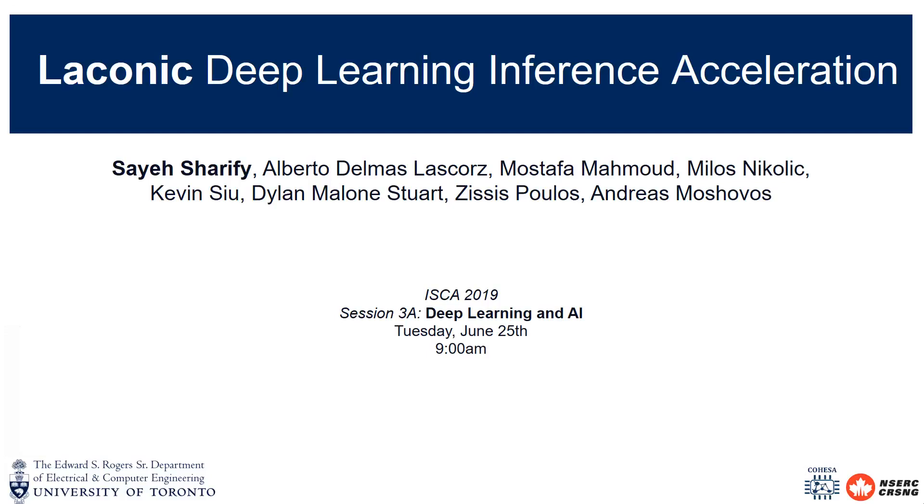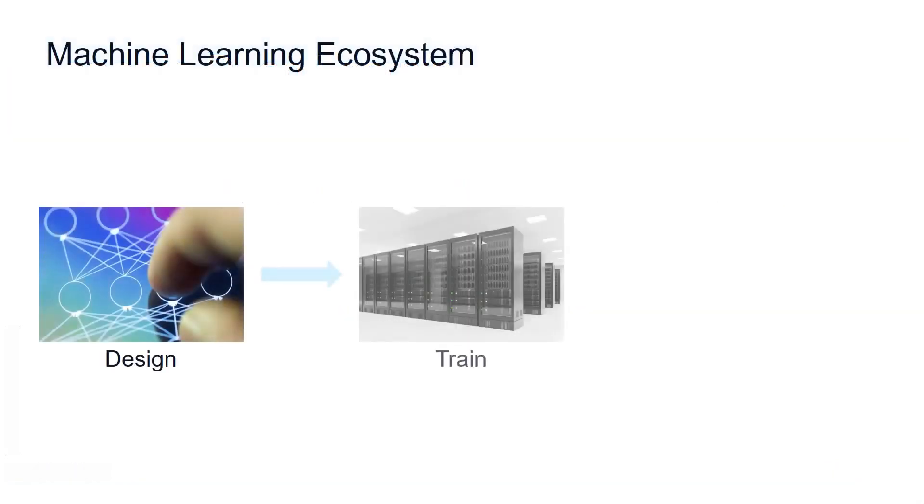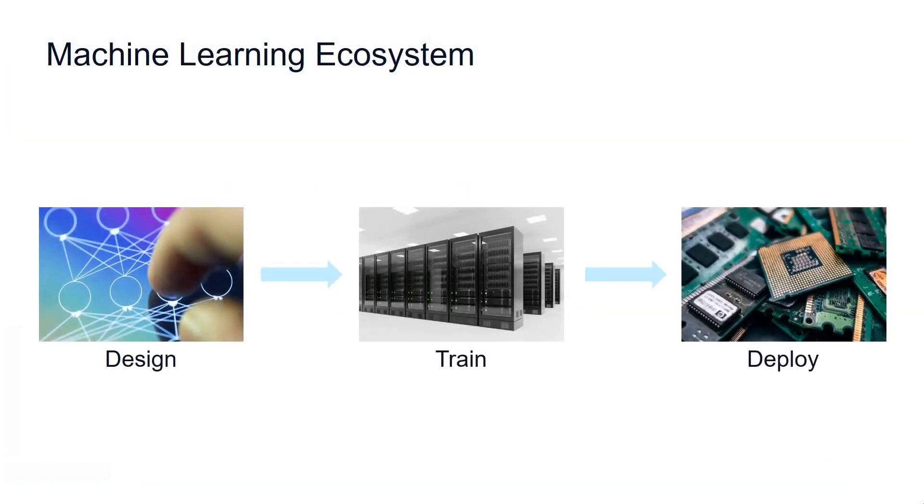Leconic is a hardware accelerator for DNNs that targets bit sparsity. Designing and training neural networks is challenging. In our work, we focus on designing hardware accelerators that improve the performance and efficiency of DNNs without requiring extra effort from the ML community.